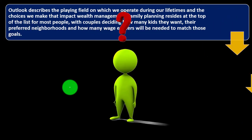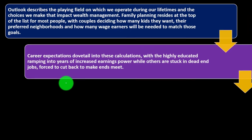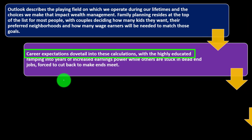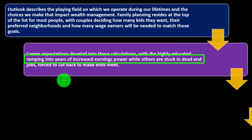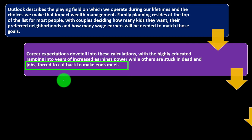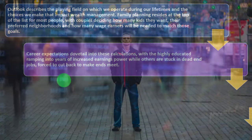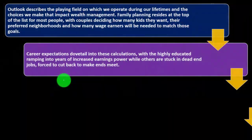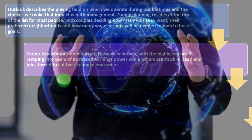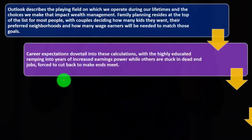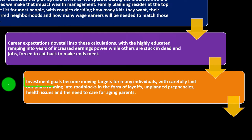Lifestyle and how large a family we want are going to drive some of our decision-making process, and we'll need to figure out how much income will be needed to meet those goals. Career expectations dovetail into these calculations, with the highly educated ramping into years of increased earnings power while others are stuck in dead-end jobs, forced to cut back to make ends meet.